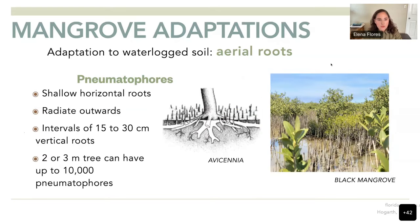In the Avicennia genus, we have pneumatophores, which are shallow horizontal roots that radiate outwards from the main trunk. Every 15 to 30 centimeters, we have these pencil-like structures that come out of the soil and the water to breathe. These are called pneumatophores.